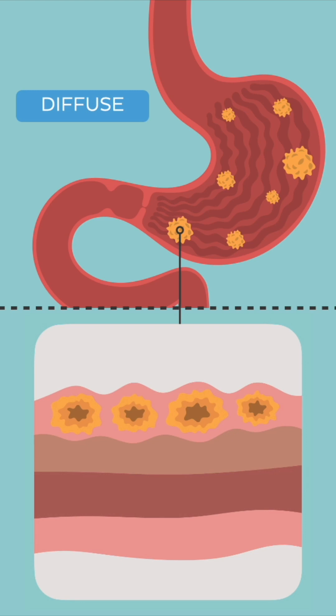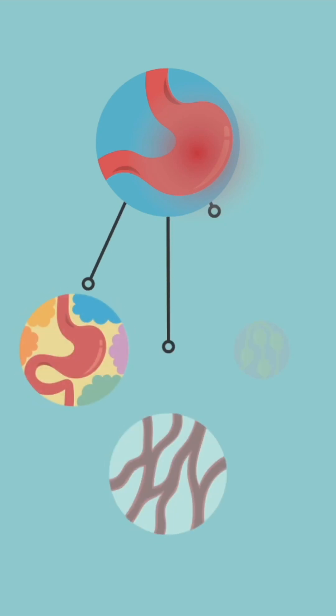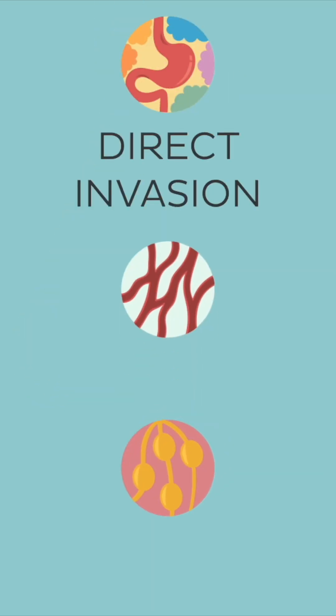After varying periods of time, if untreated, stomach cancer usually spreads via three different ways: directly spreading on the surrounding tissues, via the root of blood vessels, and via the root of lymph vessels.